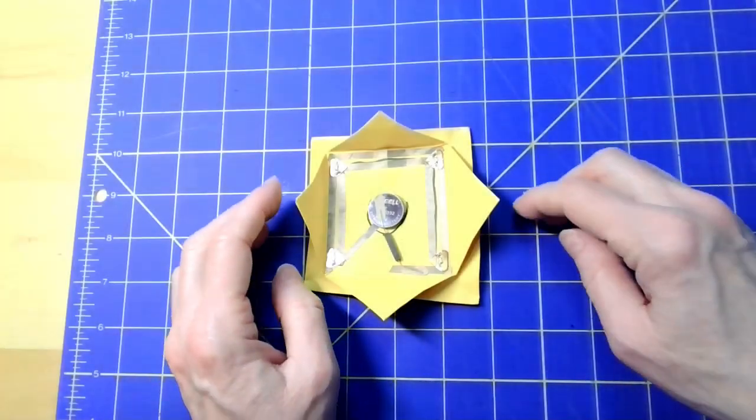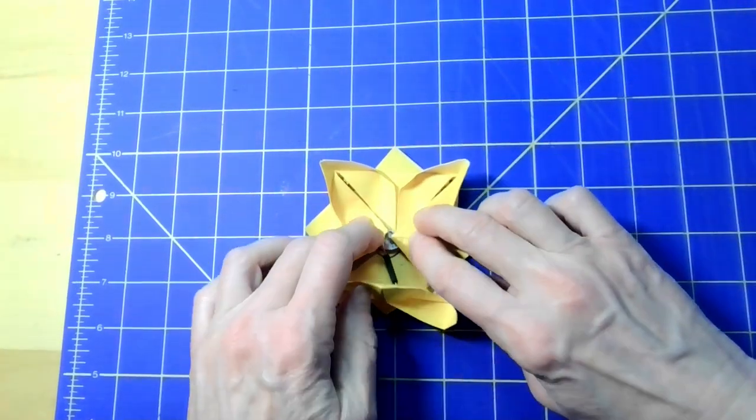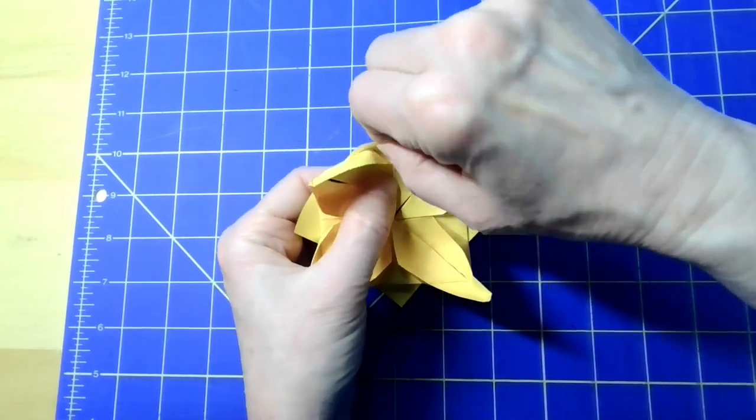You can now close your flower back up. Pull the outer petals up again to hold everything in place.